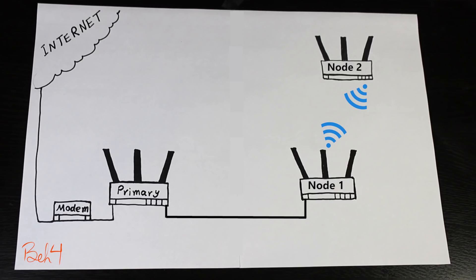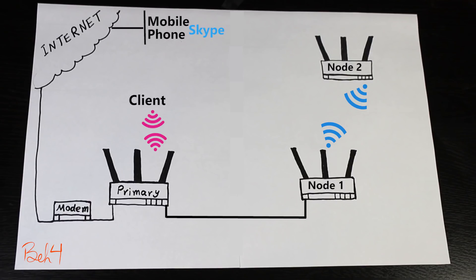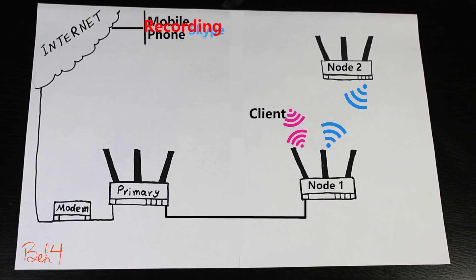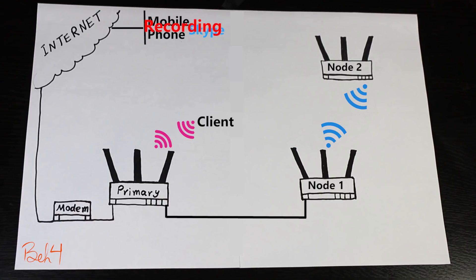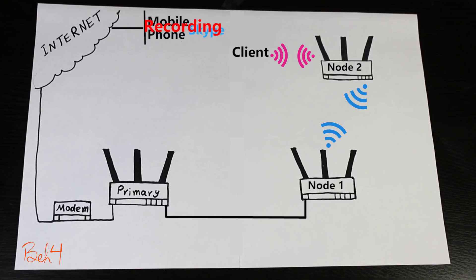In this test, I'm going to do what I did in my previous AI Mesh roaming test — basically walk around the house with my laptop and test the internet connection and the quality of a Skype call as I roam between the wireless routers. But this time there are three wireless routers, whereas in the previous video there were only two.